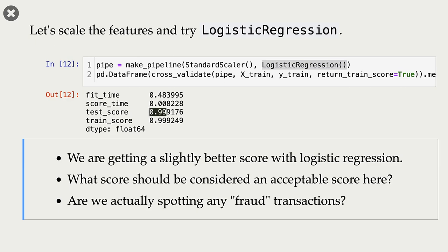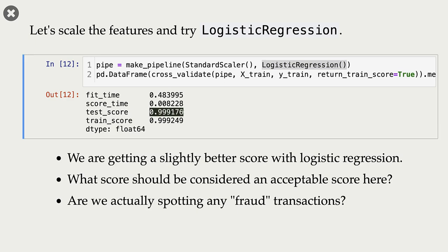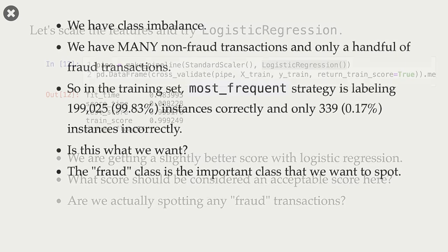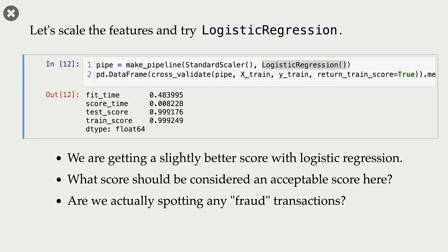Our validation score, our mean cross-validation score is 0.9991. So our accuracy is a little bit better now compared to dummy classifier. With dummy classifier, the accuracy was 99.83%, and now it's 99.91%.